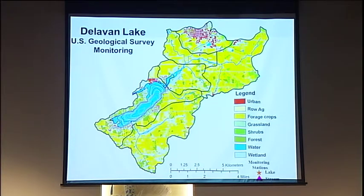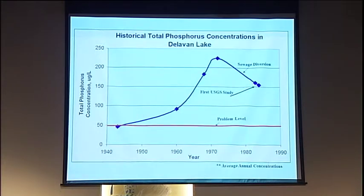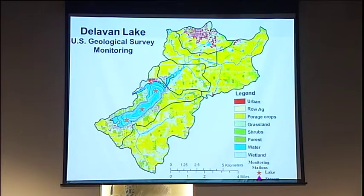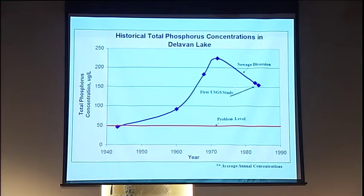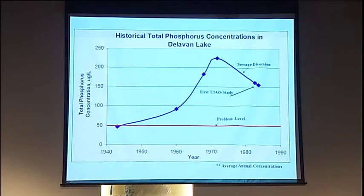We started off by going out there and sampling the lake — three locations — and what we tried to do was reconstruct the phosphorus story and figure out how it had changed through time. We went out into the literature to find out where it was all coming from. We found that the problem level for total phosphorus was about 35 to 50 micrograms per liter. We could see it increased up in the mid-70s right before the sewage treatment plant came in — it was way up over 200, which is an extremely high value for phosphorus. After the sewage treatment plant came in, you could see it dropped, but it was still in pretty bad shape.